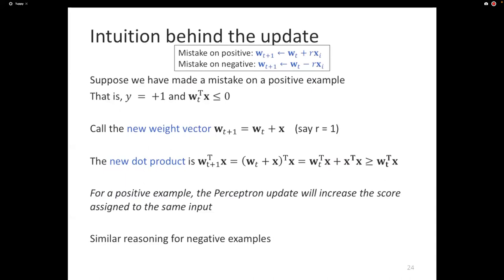For a positive example, the perceptron update increases the score associated with that input. I call this quantity the score. For a negative example where the model makes a mistake — meaning the dot product is positive — after the update the weights will become less positive. The plus becomes a minus. This is an appeal to intuition, not a formal proof.